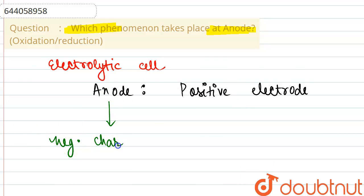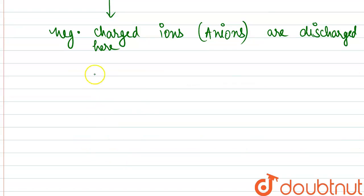Discharged here as in they come and lose the electrons. Anions lose their electrons on coming at the anode.